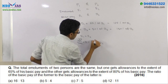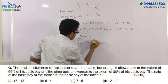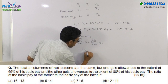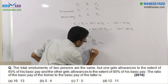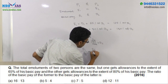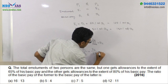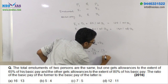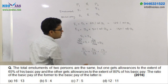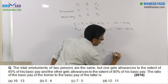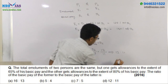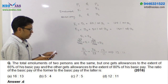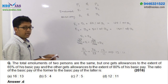Solving, we get B1 by B2 equal to 180 by 165, which simplifies to 36 by 33, then to 12 by 11. So the ratio B1 to B2 equals 12 is to 11. The answer will be option D.